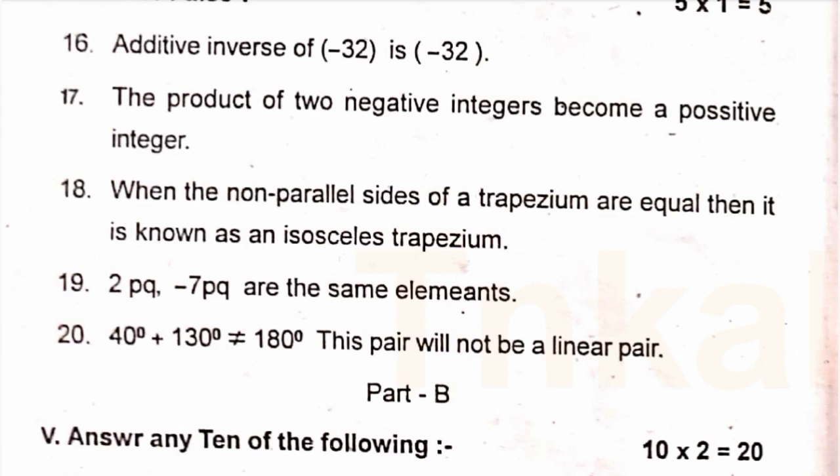Part B — answer any 10 of the following. Question 21: write in ascending order: minus 5, 0, 2, 4, minus 6, 10, and minus 10. Question 22: add using a number line — minus 3. Question 23: find the product of minus 10 into 12 into minus 9.